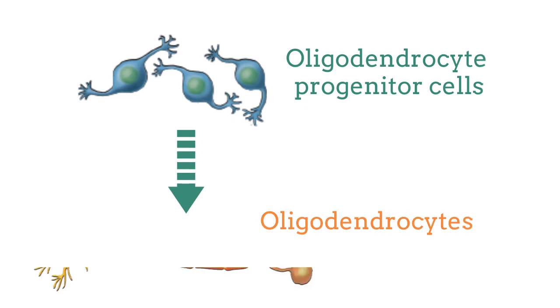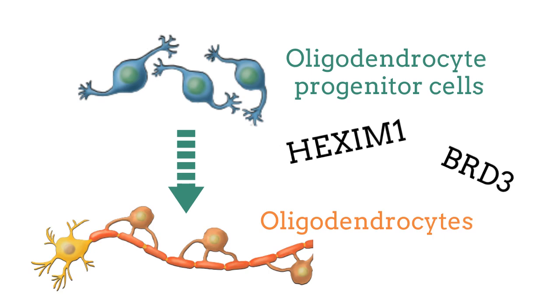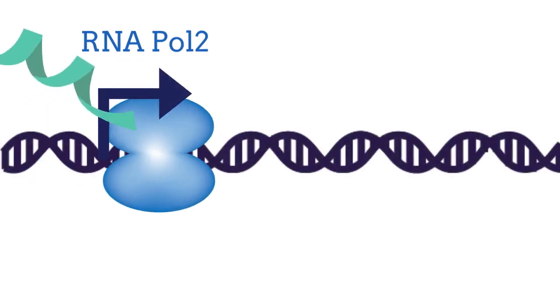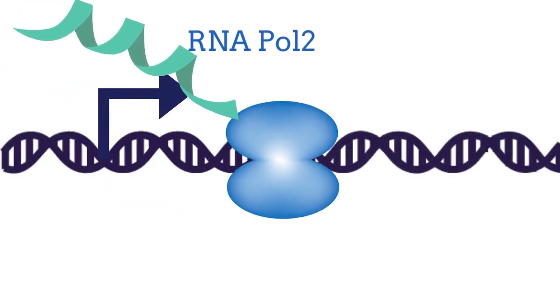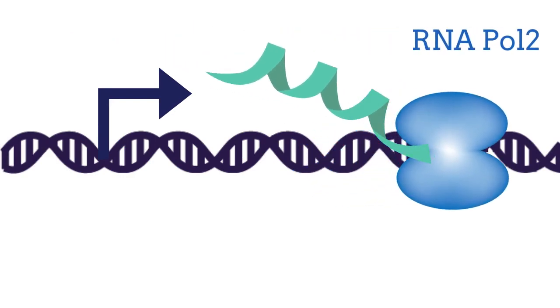This includes three loci which we predict to act in the oligodendrocyte lineage. Oligodendrocytes are the cells responsible for generating myelin in the central nervous system. We found two of the oligodendrocyte loci to dysregulate genes involved in the same pathway: the regulation of transcriptional pause release. These target genes help to regulate the release of RNA polymerase 2 from the promoter to facilitate elongation.